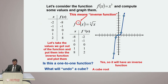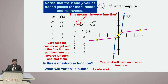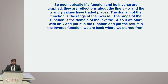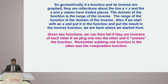Let's plot the inverse graph. We can notice that x and y values have switched places. For f(x) = x³, f inverse(x) = cube root of x. These functions are reflections of each other. Geometrically, if a function and its inverse are graphed, they are reflections about the line y = x, and the x and y values trade places. The domain of a function is the range of its inverse, and the range of the function is the domain of the inverse.